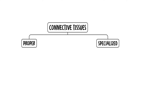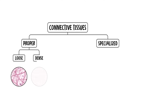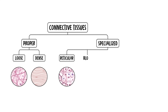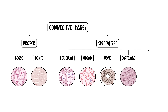Connective tissue proper is further classified into loose and dense connective tissue. Specialized connective tissue includes reticular, blood, bone, cartilage, and adipose tissues. Though perhaps less glamorous than muscle or neural tissue, connective tissue is vital for maintaining the unity and function of the body's various systems.